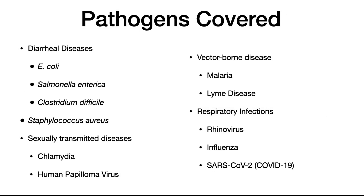These are the pathogens that we're going to cover. We're going to cover diarrheal diseases caused by E. coli, Salmonella enterica, and Clostridium difficile. We're going to cover Staphylococcus aureus, which causes skin infections and a number of other infections. We're going to talk about sexually transmitted diseases — chlamydia and human papillomavirus. We're going to talk about vector-borne diseases, malaria and Lyme disease.